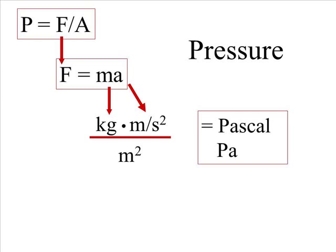The unit of pressure is derived. If we look at the first equation, pressure is force divided by area. Force is mass times acceleration. Mass is kilograms. Acceleration is meters per second squared. And then area is meters squared. So kilogram times meters per second squared over meters squared is the unit of pressure that we call a Pascal.